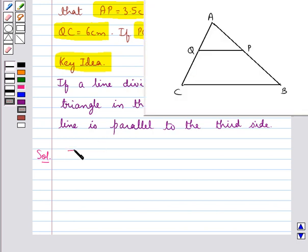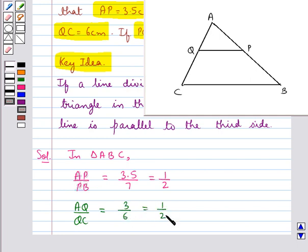In triangle ABC we have AP upon PB is equal to 3.5 upon 7 which is equal to 1 upon 2. Then AQ upon QC is equal to 3 upon 6 which is equal to 1 upon 2.